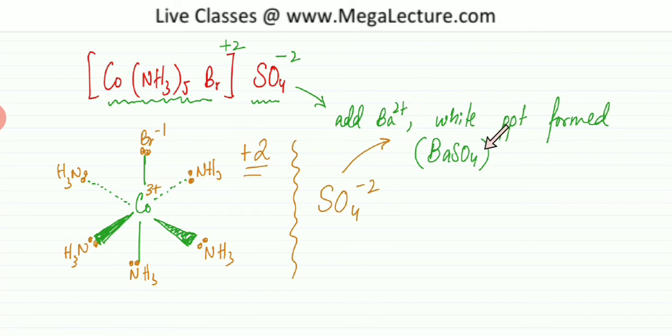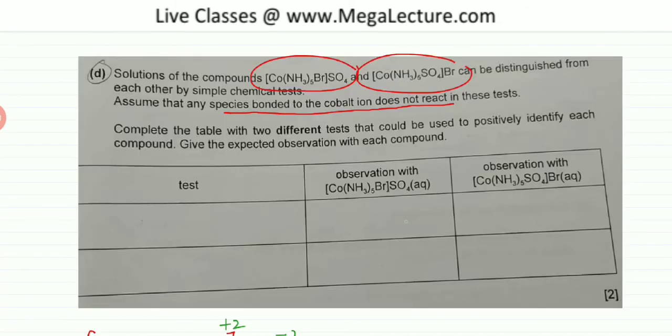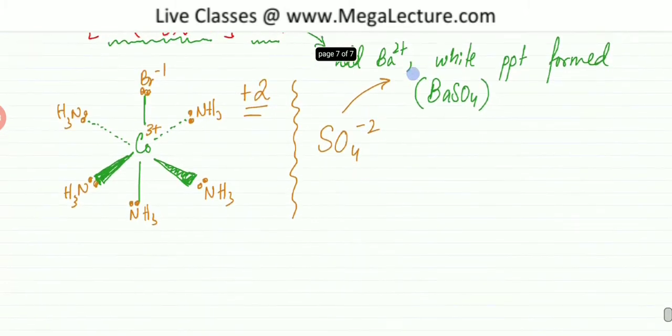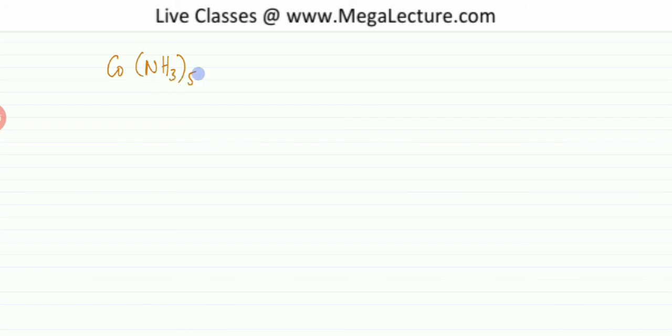The other compound is cobalt with 5 NH3s, where SO4 is directly bonded to it and Br is next to it outside. This complex ion has Br minus 1 attached externally, which means the entire complex ion would have a charge of plus 1. SO4 is minus 2.